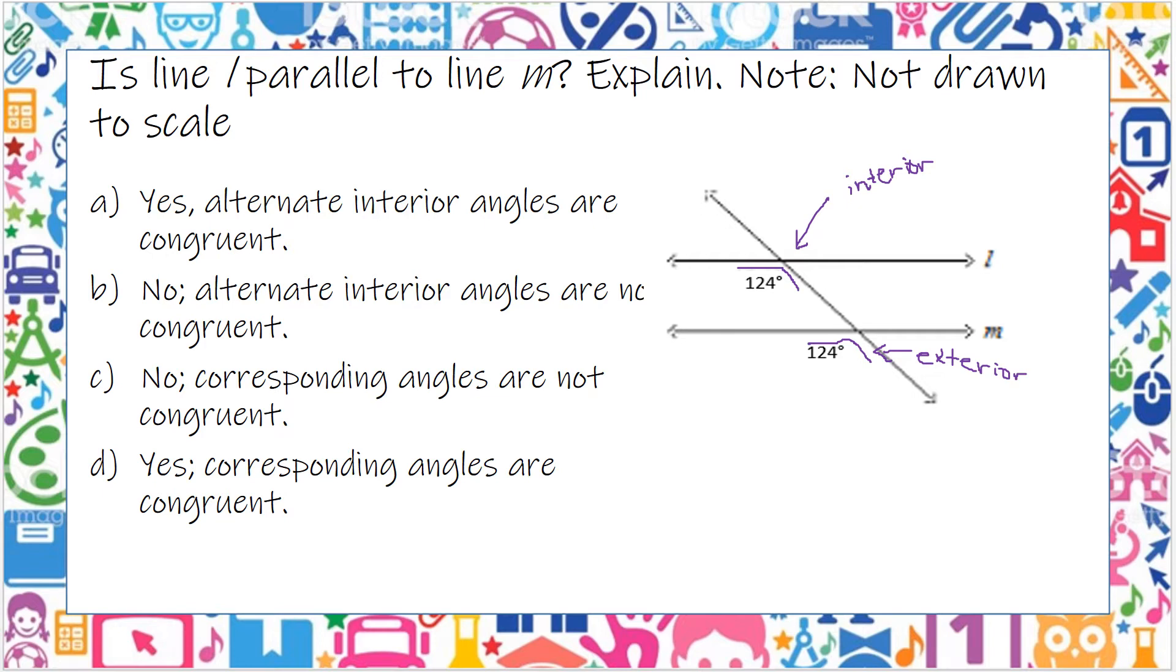Well, this 124 at the top is in the bottom left-hand side here of this line L. And line M, our 124 is also on the bottom left-hand side. So those would be corresponding, which means that they are congruent.